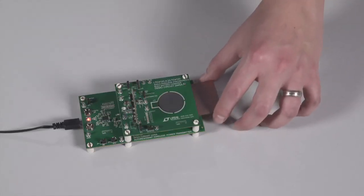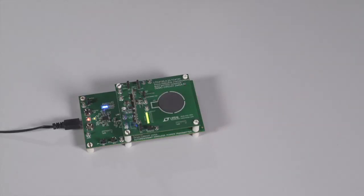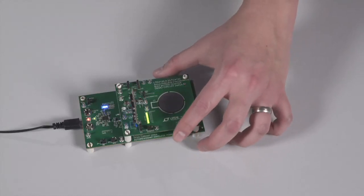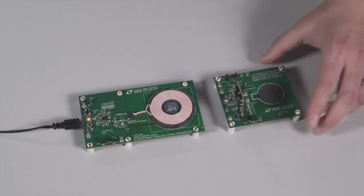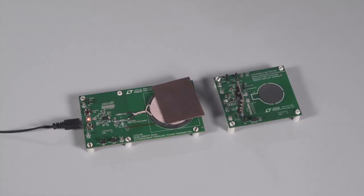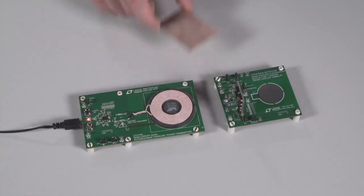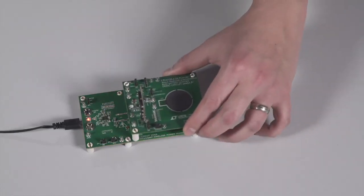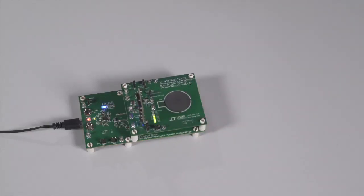When the foreign object is removed from the field, power delivery resumes normally. This foreign object detection also works when there is no receiver. When the object is placed on the transmit coil, the blinking of the bar graph on the transmit circuit stops, indicating that no power is delivered to the foreign object, not even during the sweep. As soon as the object is removed, the blinking resumes and power delivery can continue when a valid receiver is again placed on top of the transmit coil.